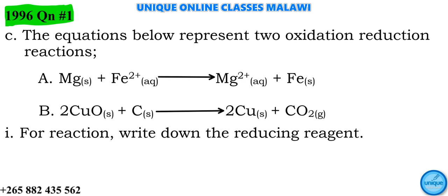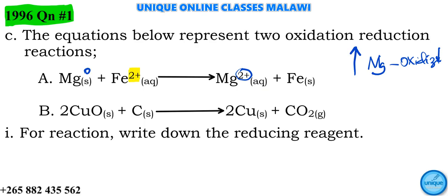Looking at magnesium in equation A: its oxidation number is zero on the left, and two-plus on the right, so the oxidation number has increased - therefore magnesium has been oxidized. Looking at iron: the oxidation number is two-plus on the left and zero on the right, meaning the oxidation number has decreased - therefore iron has been reduced.